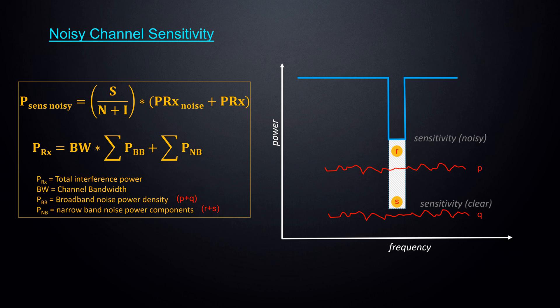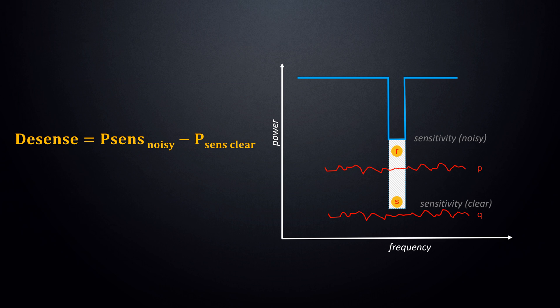In reality, the radio will operate in an environment where interfering signals are present. Noisy channel sensitivity defines the degraded sensitivity in the presence of these interfering signals. It accounts for any number of broadband and narrowband signals from any combination of aggressors. The difference between the clear and noisy channel sensitivity is desense. Tune into part two for the workflow.